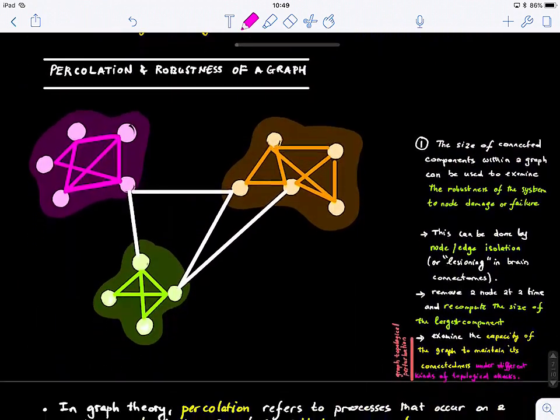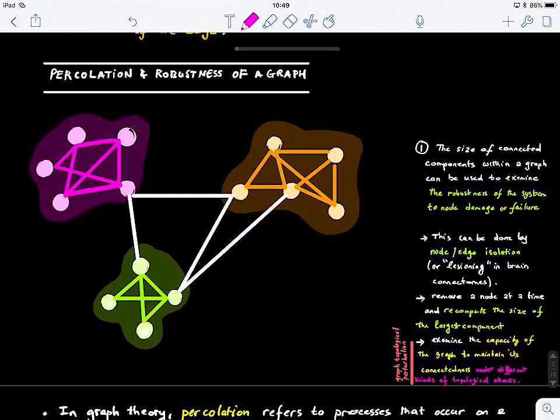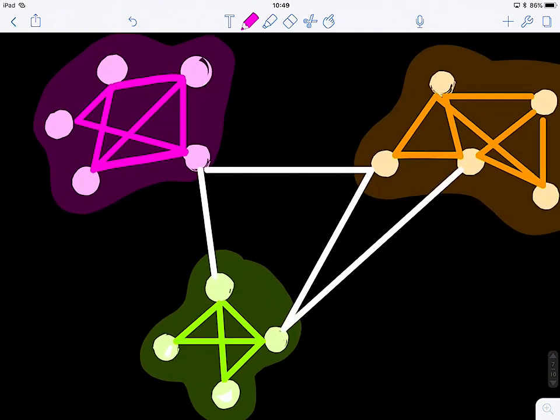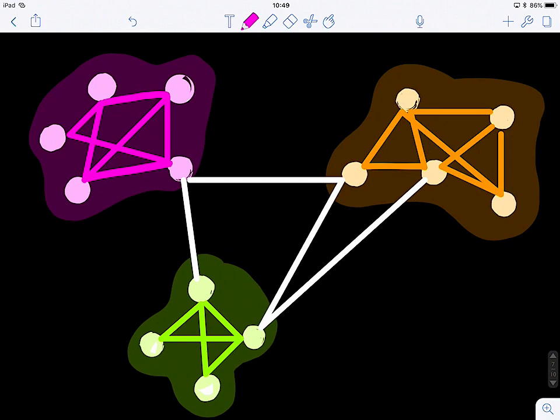Now let's move to the second step, the second part, which is percolation and robustness of a graph. So in this case, let's say that I look at this graph, I have this network, and then I want to know how robust it is to attacks. Let's say I randomly remove a node or an edge.